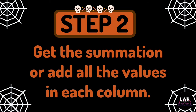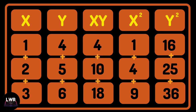Let's move on to step 2: get the summation or add all the values in each column. So the first column, you need to add 1 plus 2 plus 3. The second column, add 4 plus 5 plus 6, and so on.